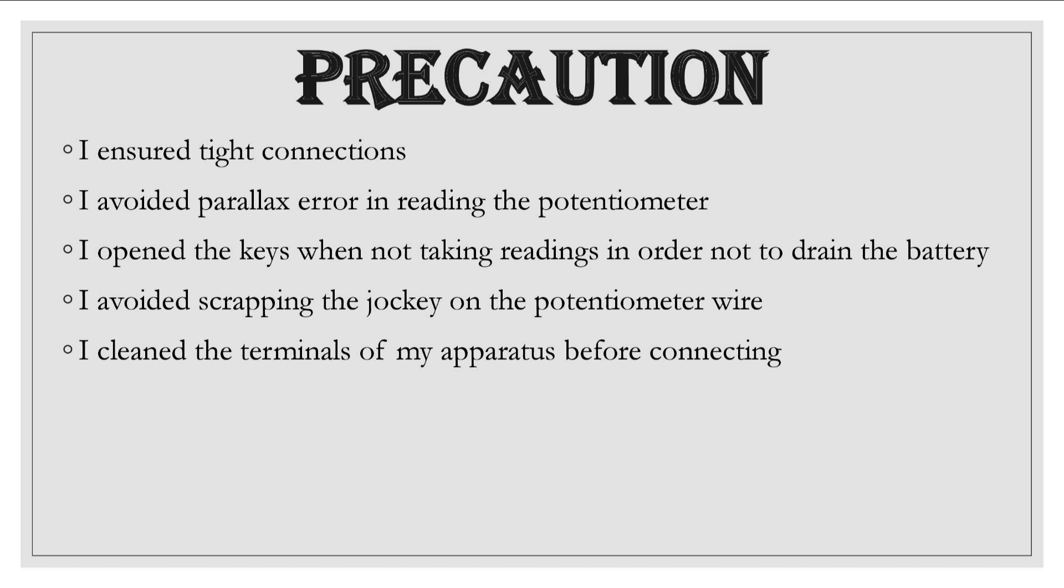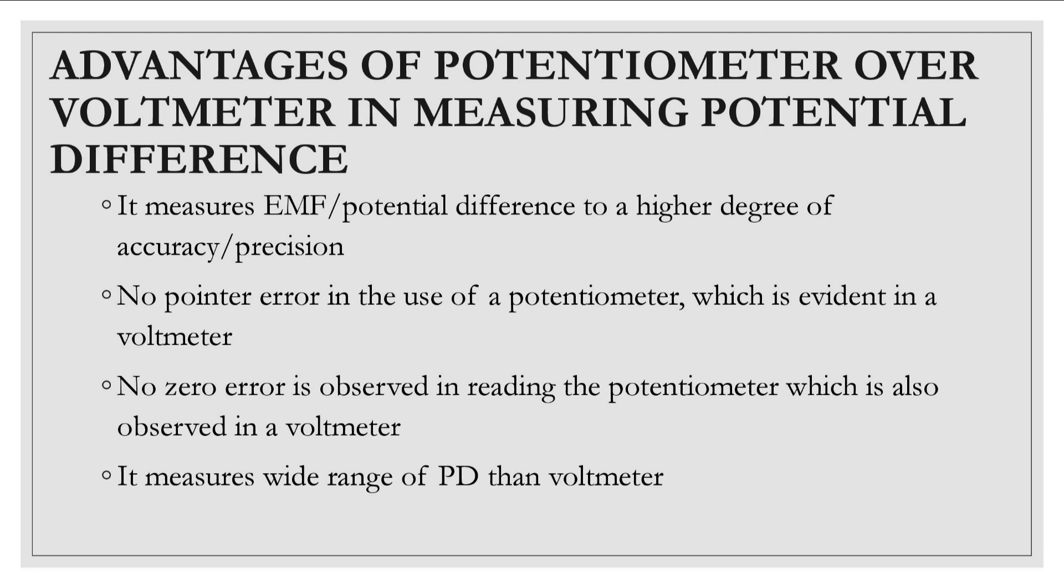Aside from these precautions there are a few short answer questions that were asked. One of them is that we should state the advantages of using a potentiometer over voltmeter in measuring the potential difference. In the use of potentiometer in measuring potential difference it gives us a higher degree of accuracy and precision compared to a voltmeter. Voltmeters can fluctuate, the readings can fluctuate, zero error can affect the reading of a voltmeter.